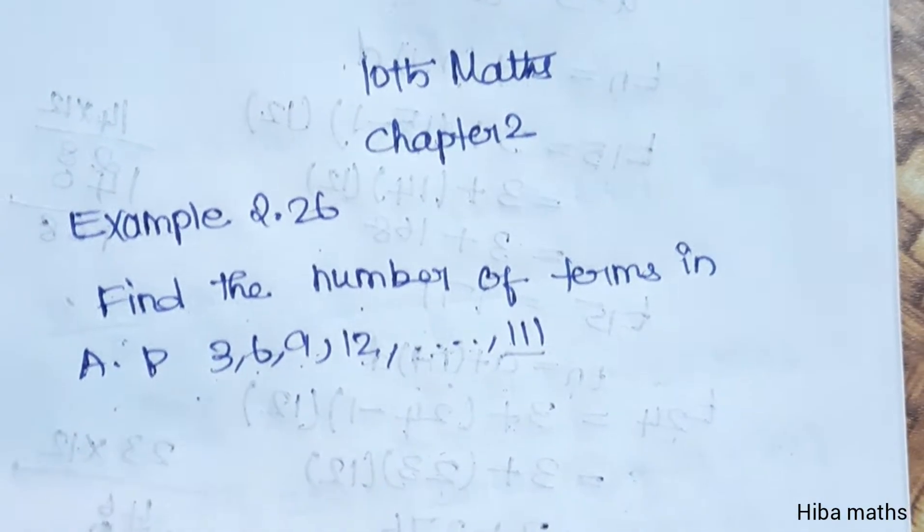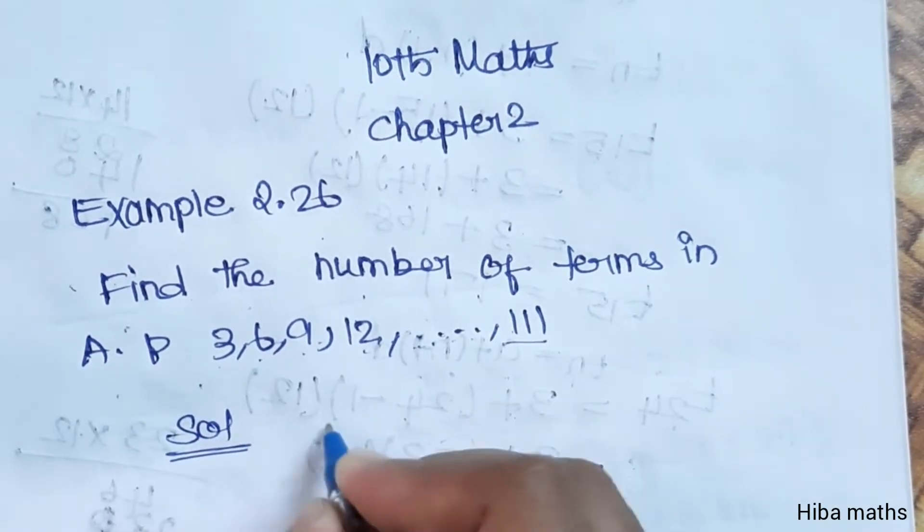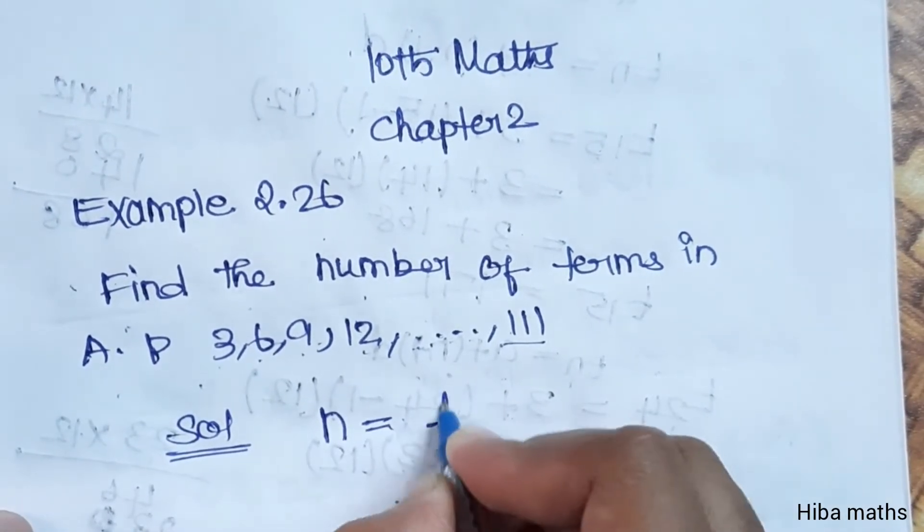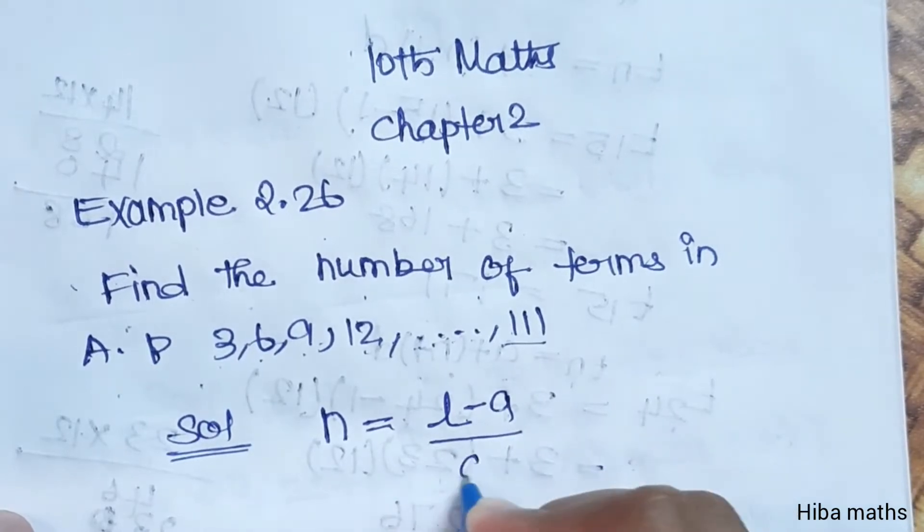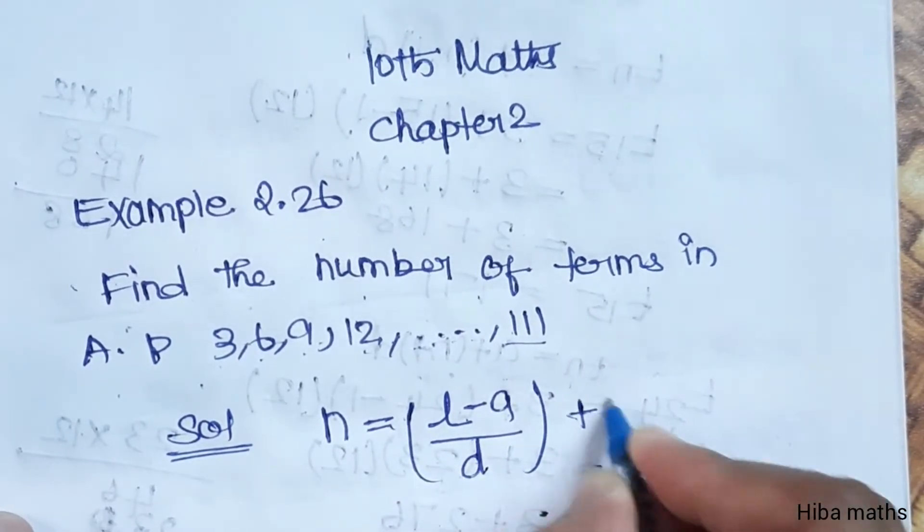We can get the number of terms. That is, n equals L minus A by D plus 1. We can use this formula.